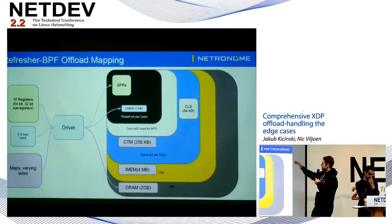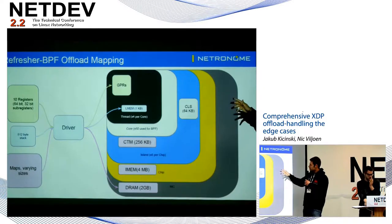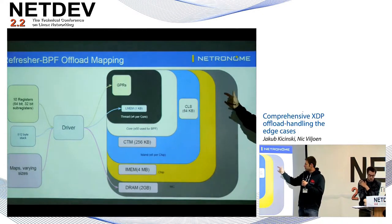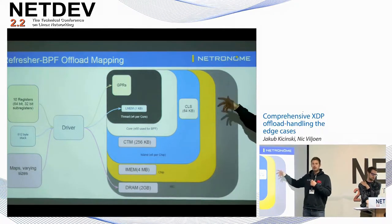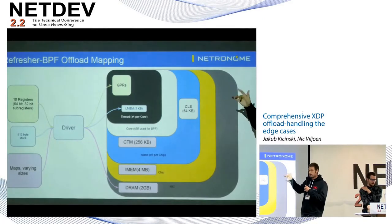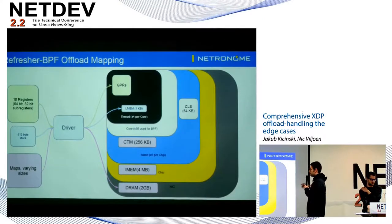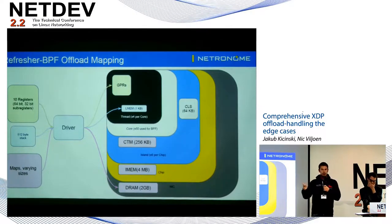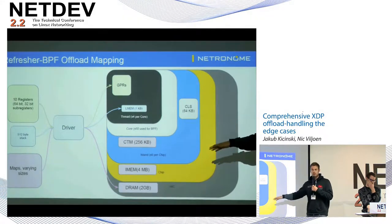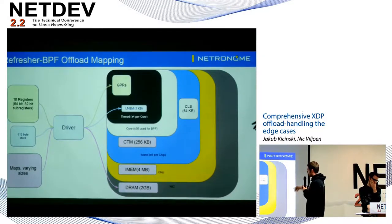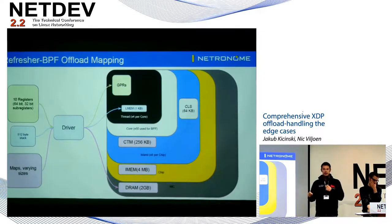This shows how it fits onto the actual NIC. You've got 10 BPF registers that map into general purpose registers — about 64 per thread — with 60 cores on the device and four threads per core, though we really use four threads for BPF offload. The stack goes into local memory, about a kilobyte per thread per core, and currently all maps go into DRAM, where we have about 2 GB, expandable to 8 GB. There are other memories not yet used but they become important later.